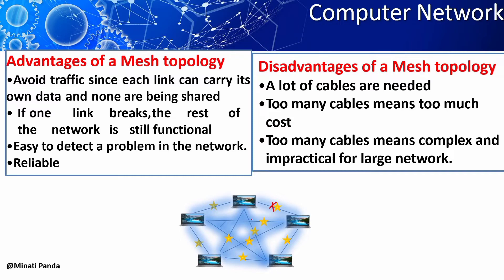Now we will discuss the advantages of mesh topology. It avoids traffic since each link can carry its own data. If one path is busy, it can easily choose another path to the destination. If one link breaks, the rest of the network is still functional. It is easy to detect a problem in the network, hence it is reliable and fault tolerant.